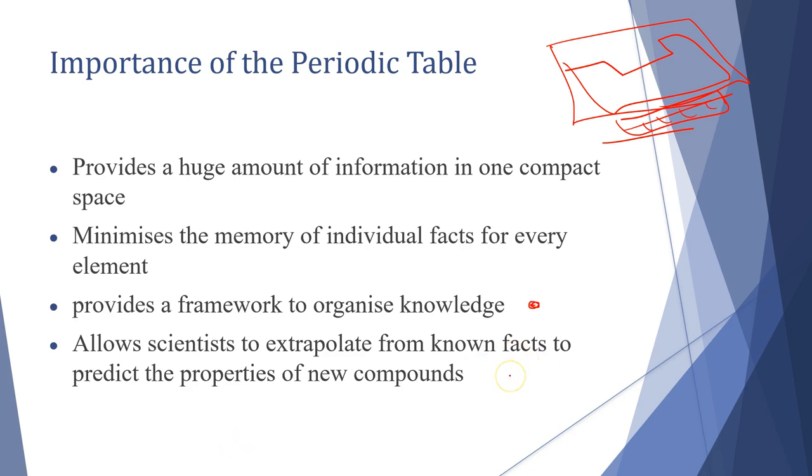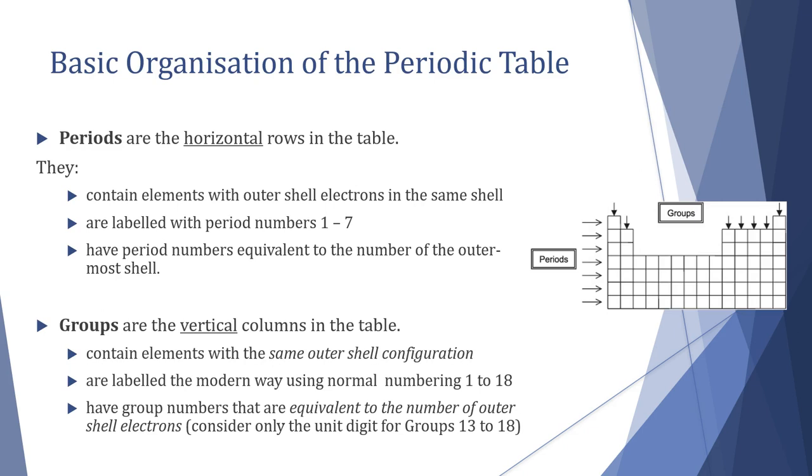For the periods we have periods one through seven - the number of the period equates to the outermost shell of the atom that we are talking about. The groups as we said before are the vertical columns - they contain elements that all have the same outer shell configuration and are labeled using normal numbering from 1 to 18, remembering that we don't use roman numerals now for that anymore.